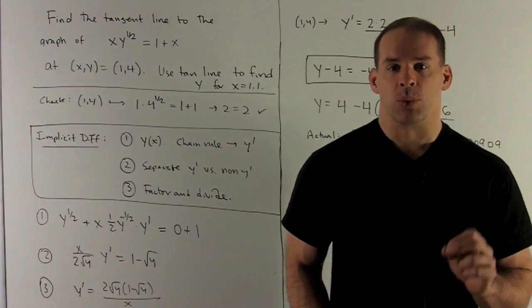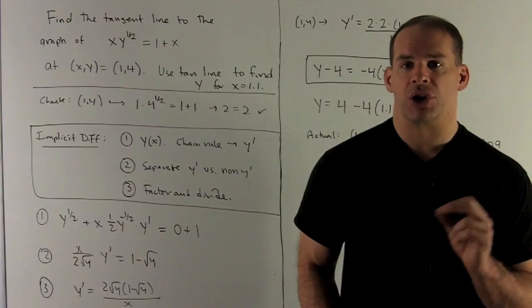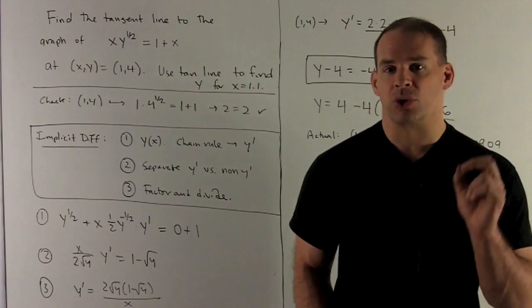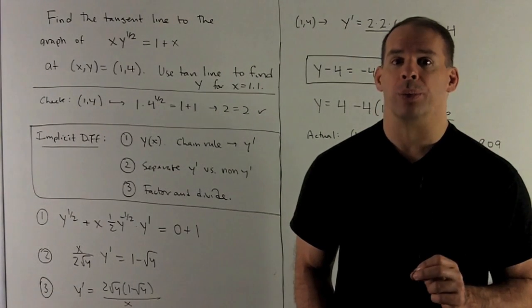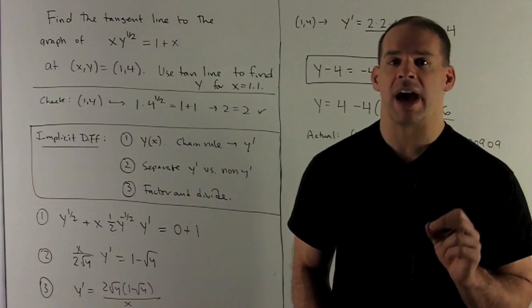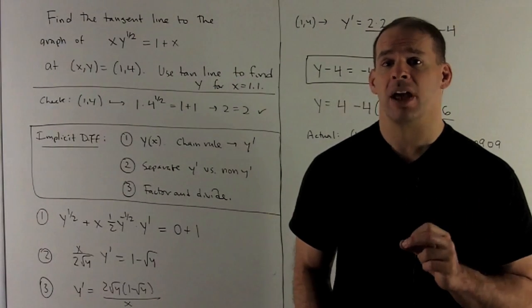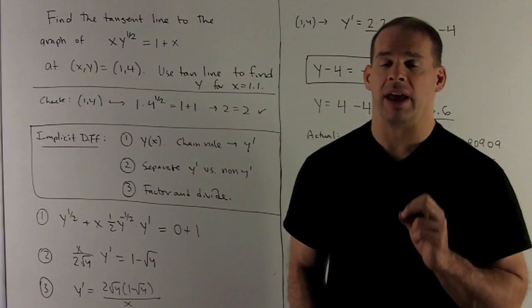Let's do our derivative. For that first term, we're going to have xy^(1/2). We're going to take the derivative of that with respect to x. So that's going to be initially a product rule. We're going to have 1 times y^(1/2) plus x times the derivative of y^(1/2).